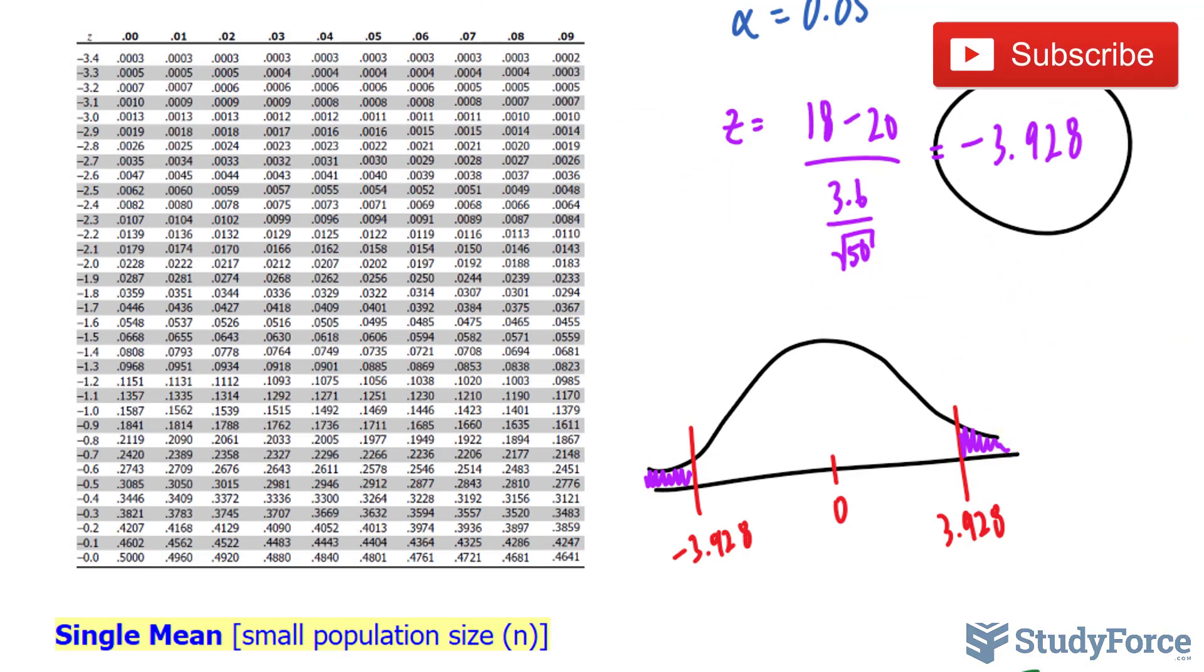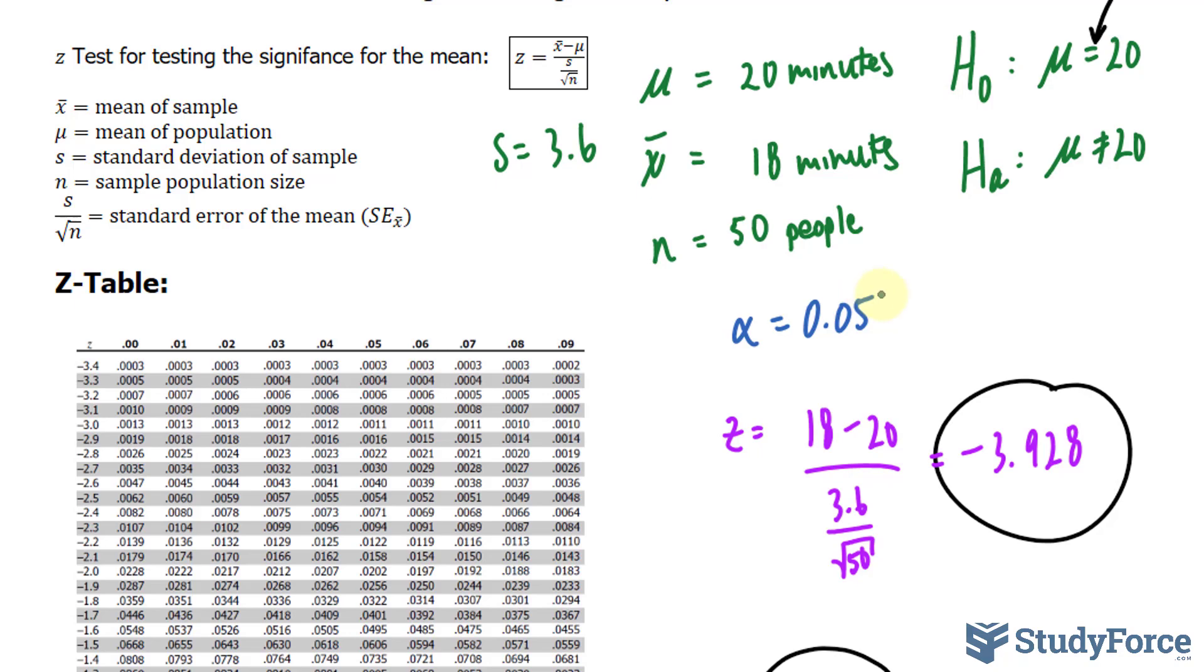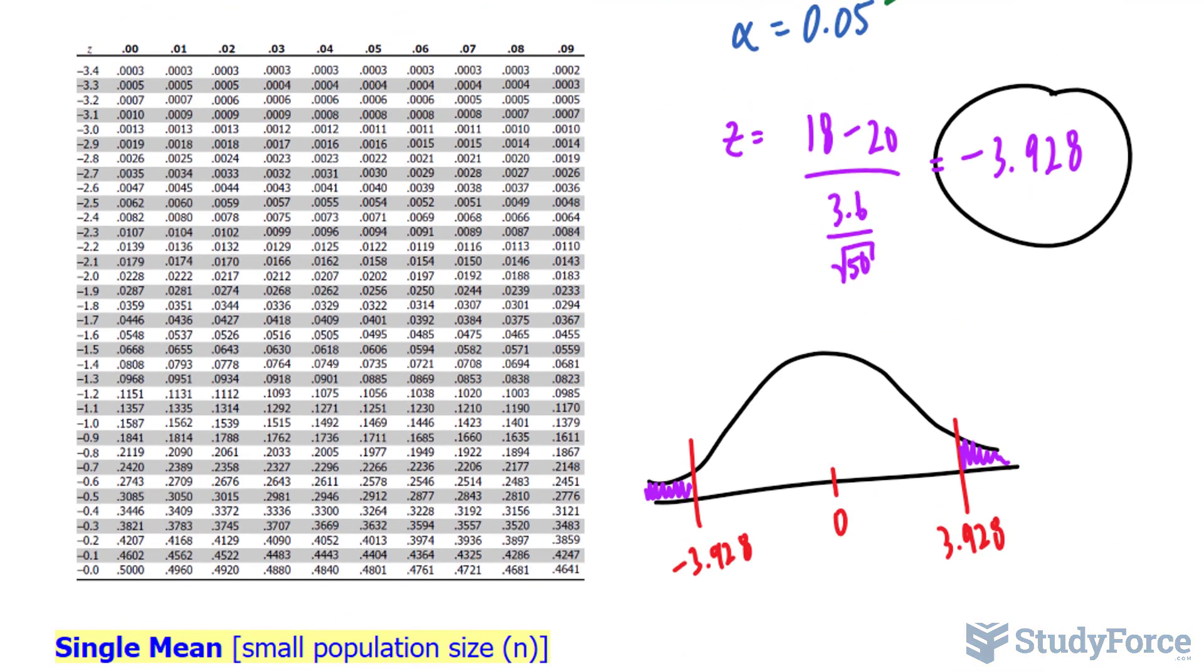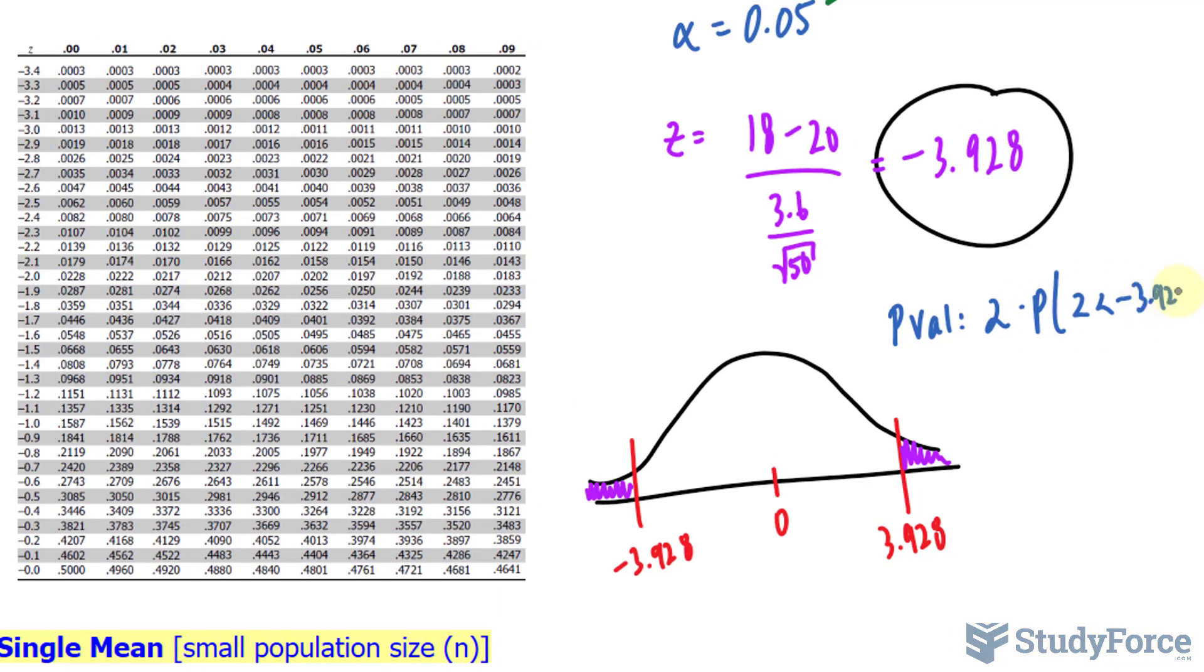Using this value, we will calculate the probability value. And the probability value, if it's less than 0.05, which was what we chose for α, if it's less than 0.05, then we reject the null hypothesis. Here's how to calculate the p-value. We write down p-value, and it's a two-tail test, so I'll write down 2 times the probability that z is less than negative 3.928.